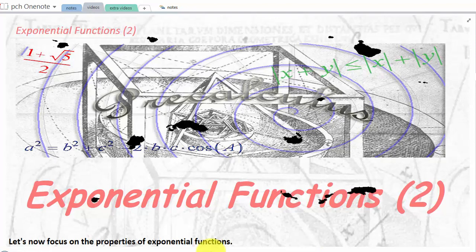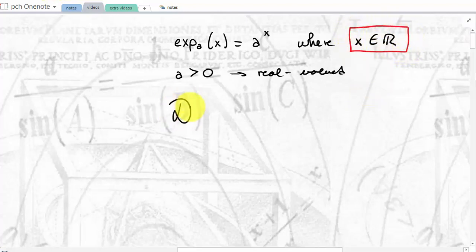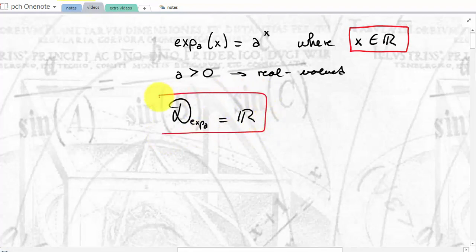Let's begin by recalling the definition of an exponential function. To define the exponential function in base a, we first need to take a base that is above zero so that the function will be a real-valued function. Then f base a of x is defined to be a to the power of x, where x is a real number. The novelty in this definition is that the exponent is a real number. Therefore, the domain of any exponential base a is all real numbers, and this is the first property of an exponential function.